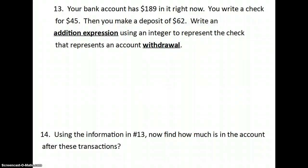Alright, thrown in a word problem. Your bank account has $189 in it now. You write a check for $45, and then you make a deposit of $62. Write an addition expression using an integer to represent the check that represents an account withdrawal. So what's that mean? We have $189 in our bank account. That's what we start with. We write a check for $45, so we're giving somebody $45. So we're losing $45. But then I make a deposit, which means I'm putting money into my account. So I'm adding money of $62.